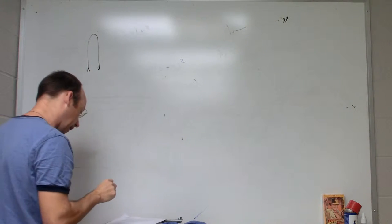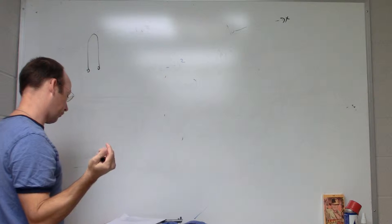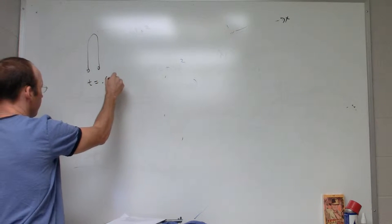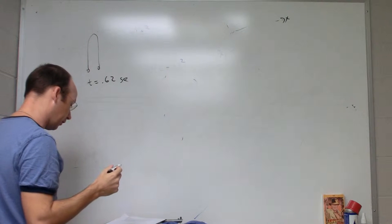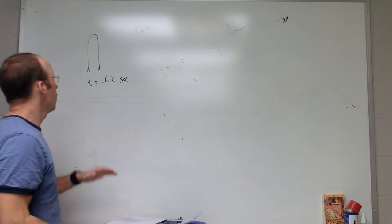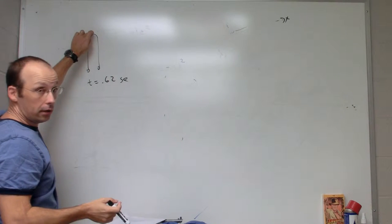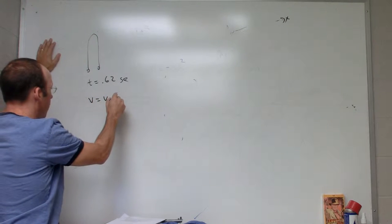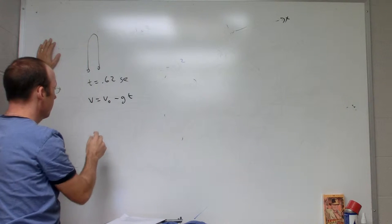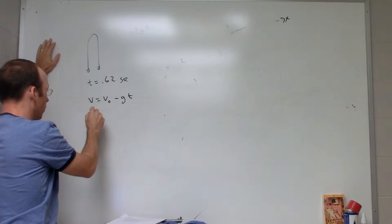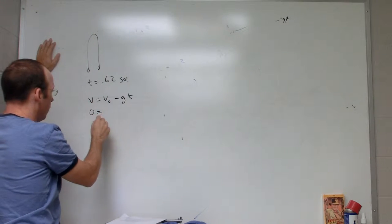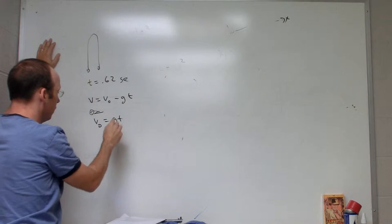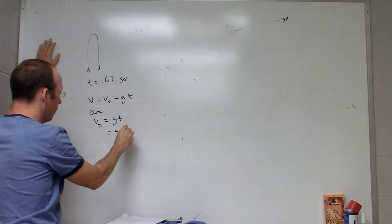It comes back down and the lab person records a time of 0.62 seconds, so we have t equals 0.62 seconds. How would you calculate the velocity? Well, the time to get to the highest point is half that. Then you can say v equals v naught minus gt, and the final velocity is zero. So the initial velocity, solving for that, v zero equals gt. So it's going to be 9.8 times 0.31 seconds, and that gives me 3.03 meters per second.